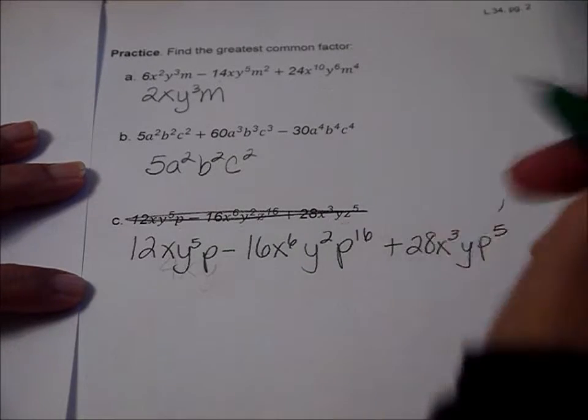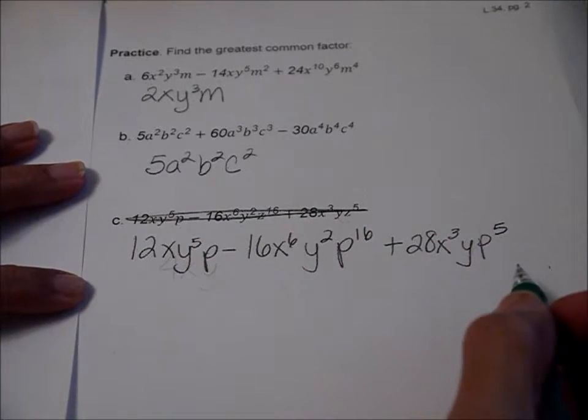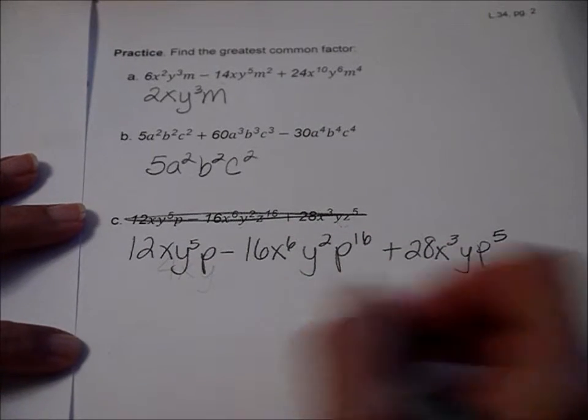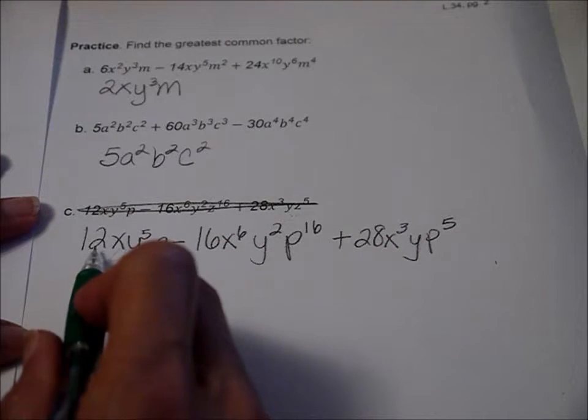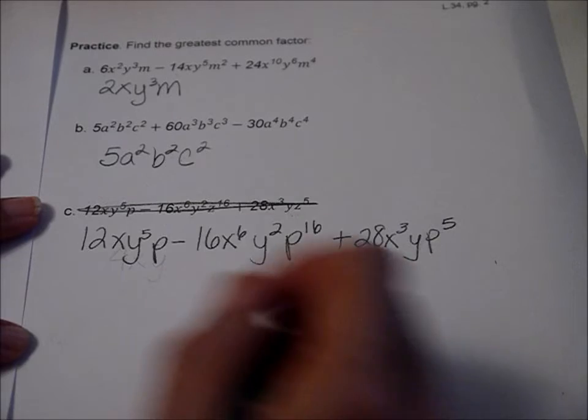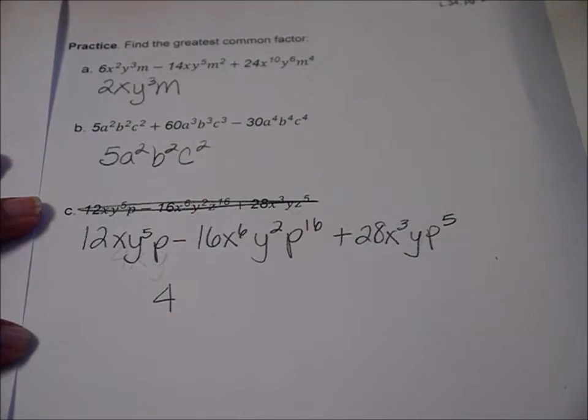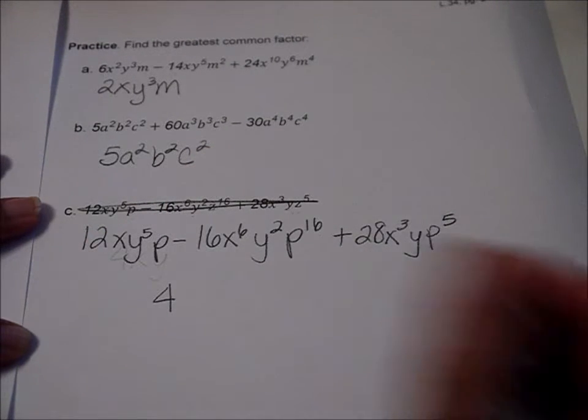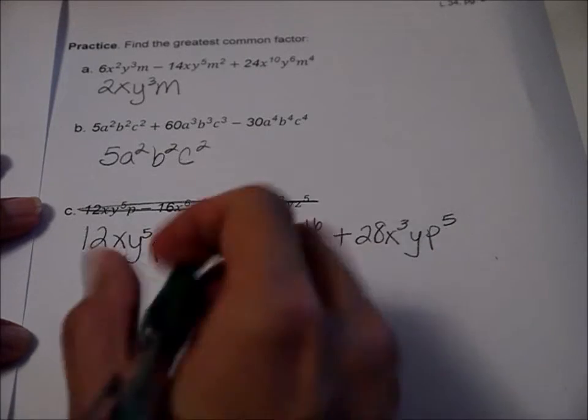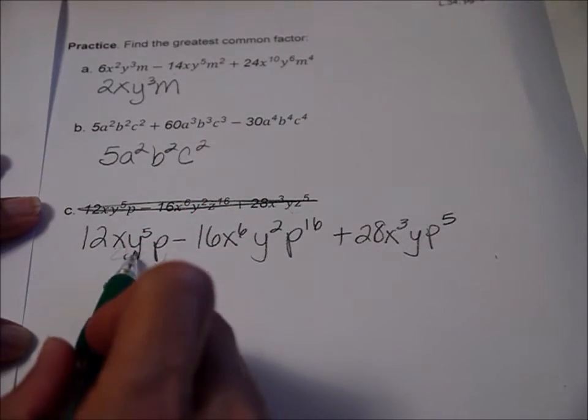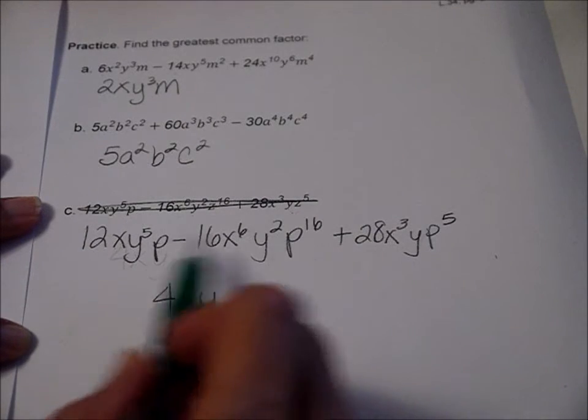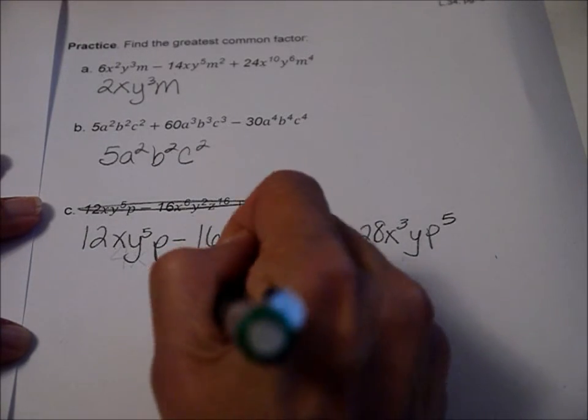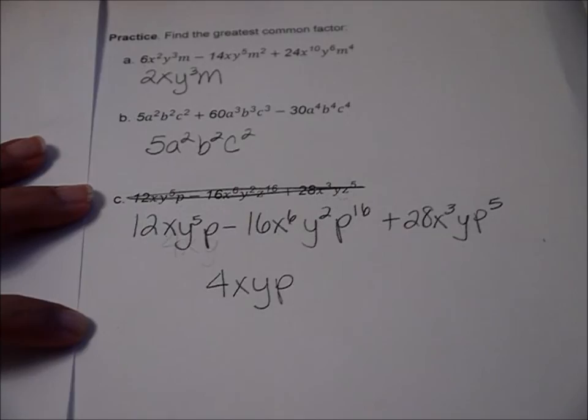I had to rewrite this because on my notes the first time when I made this video, I had this written wrong. So here's the actual problem, and I'll fix it on your notes before you see them. So I look and I see 12, 16, 28. Well, 4 goes into each of those. And it looks like they all at least have one x, they all have at least one y, and they all have at least one p. And so there is the answer to that.